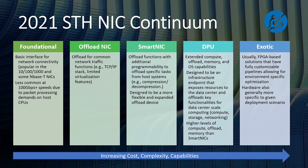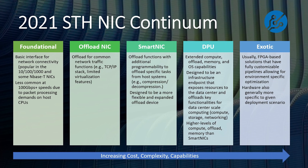Now it's time for the continuum — the 2021 STH NIC continuum. We go from a foundational NIC to an offload NIC, smart NIC, DPU, and then what we're going to call exotic. Foundational NICs are really the basic interface for network connectivity, popular in the 10, 100-megabit, and 1-gigabit generations, and in the NBase-T generations — inexpensive, low-cost, basic NICs that don't necessarily have a lot of packet processing features, because you didn't need it at those speeds.